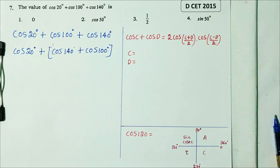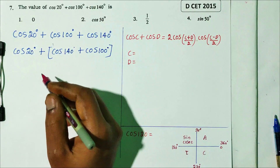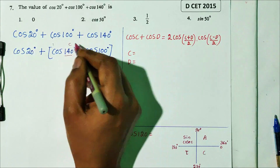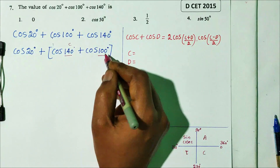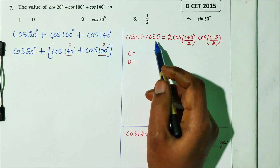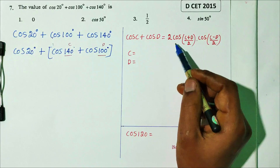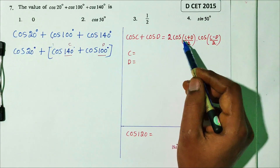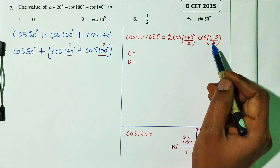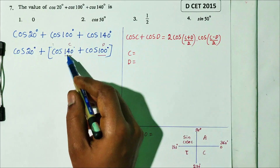Let C equal 140 and D equal 100. Then we apply the formula: cos C plus cos D equals 2 cos((C+D)/2) times cos((C-D)/2).